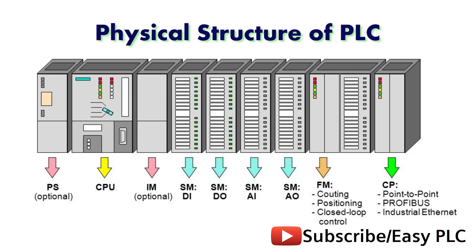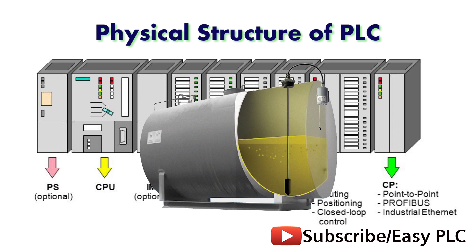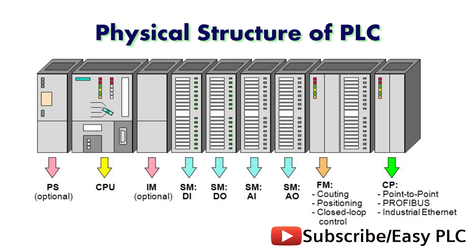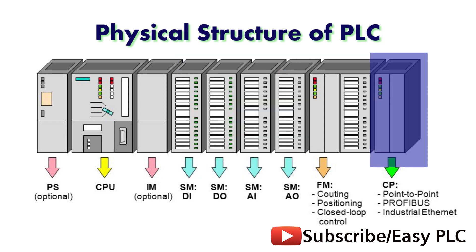Physical structure of PLC. The structure of a PLC is almost similar to a computer's architecture. Programmable logic controllers continuously monitor the input values from various input sensing devices — for example, flow meter, pressure sensor, hardwired signal, etc. — and produce corresponding output depending on the nature of production and industry. A typical block diagram of a PLC consists of 5 parts: rack or chassis, power supply module, central processing unit (CPU), input and output module, and communication interface module.